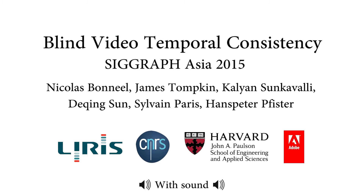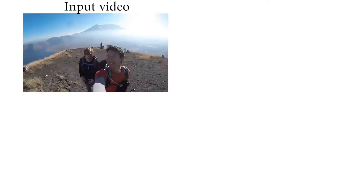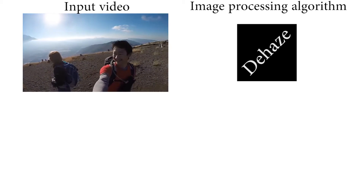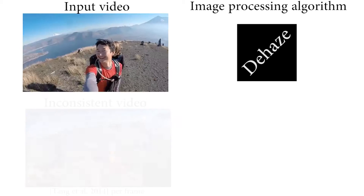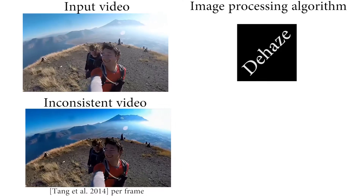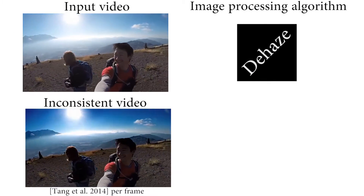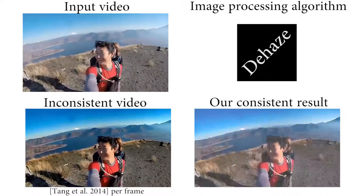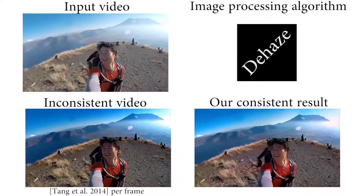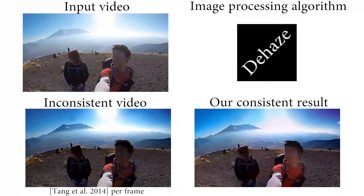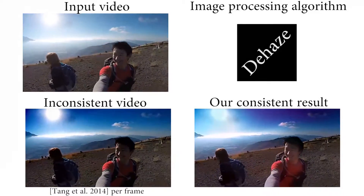Blind video temporal consistency. Given an input video and an image processing algorithm as a black box, we turn per-frame temporally inconsistent video into temporally consistent video without knowing anything at all about the underlying image processing algorithm.